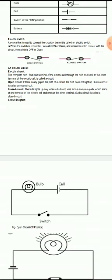two types of circuits: open circuit and closed circuit. Open circuit: if there is any gap in the path of a circuit, the bulb does not light up. Such a circuit is called an open circuit. Closed circuit: the bulb